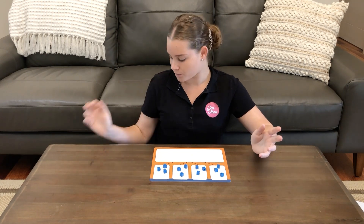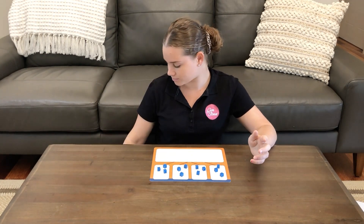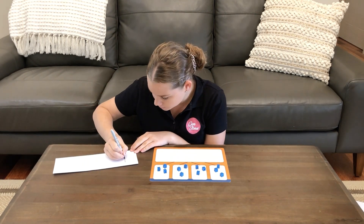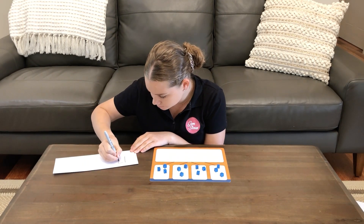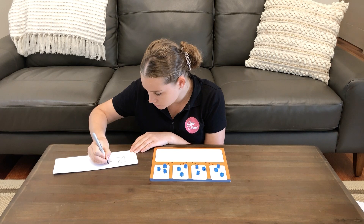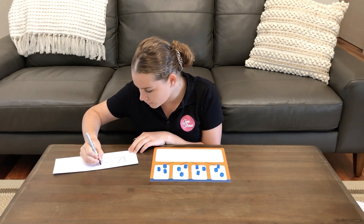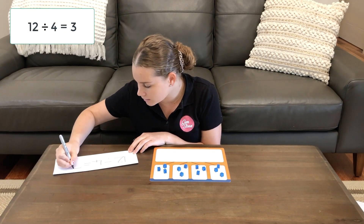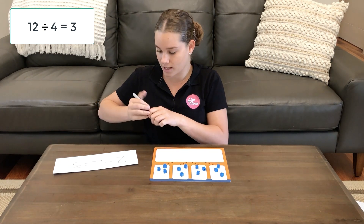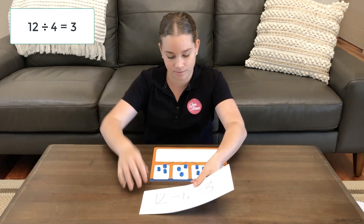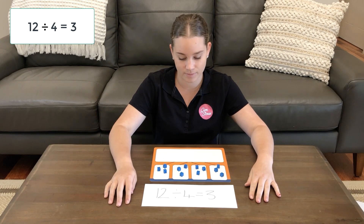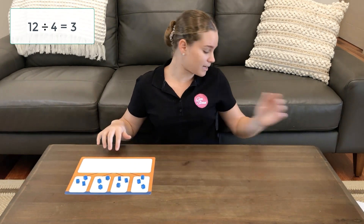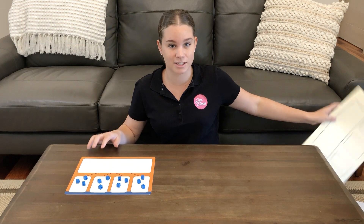So we figured this out by using division: 12 divided by 4 is 3. We can write this in an equation: 12 divided by 4 equals 3. And that's our matching equation.